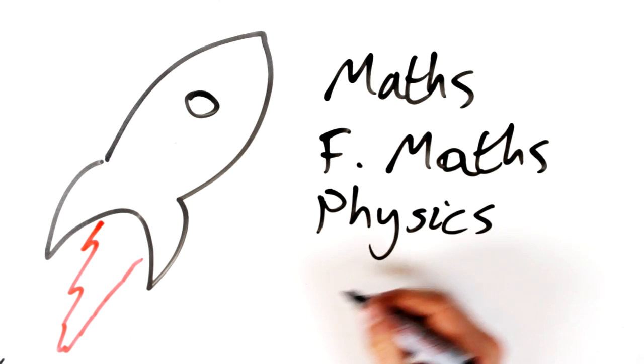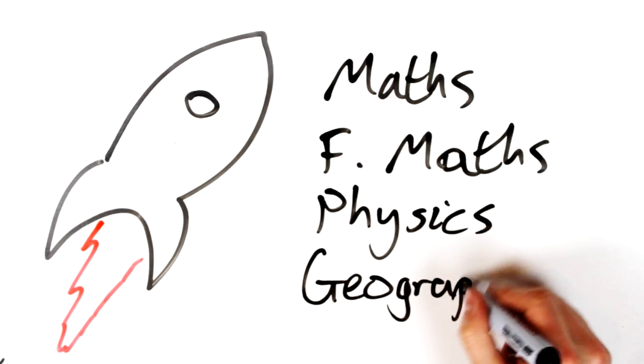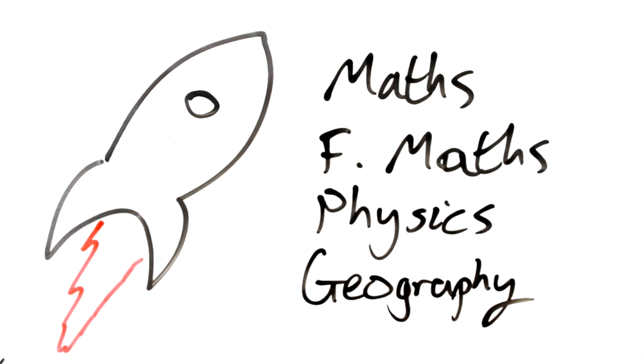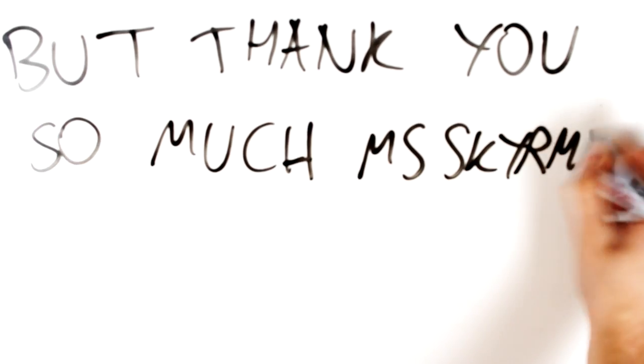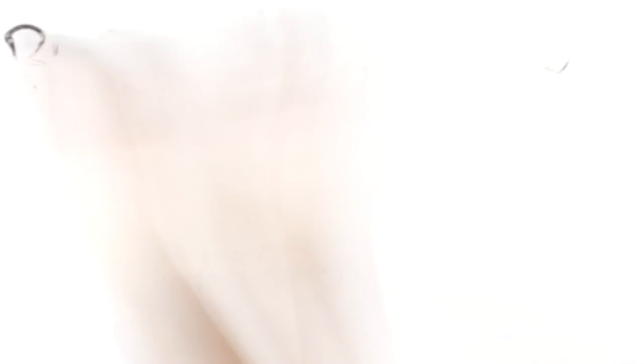So I chose my A levels accordingly: I did maths, further maths, physics and geography. Now my maths teacher, who was an absolutely inspirational woman called Miss Skirm, thought that further maths was a step too far for me. I'd scraped an A star in GCSE maths, which she also didn't think I could do, and so she reluctantly let me take further maths. The subject, particularly the statistics and the pure stuff, really pushed me.